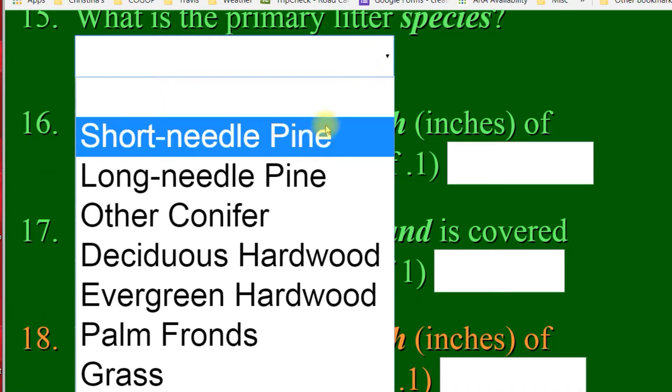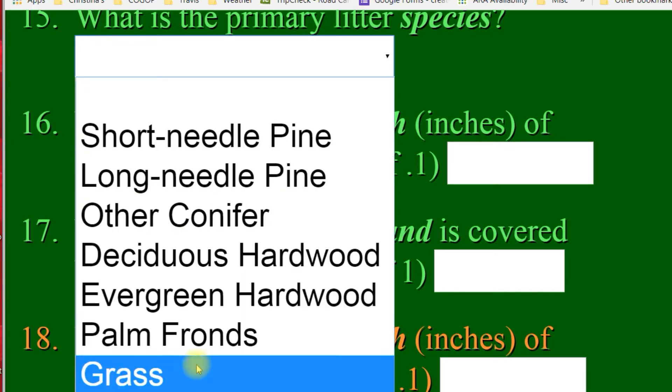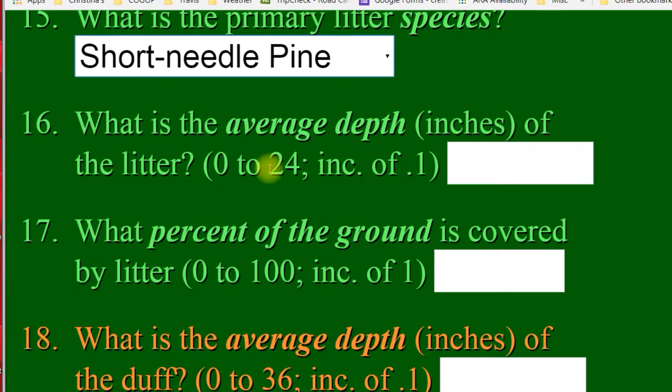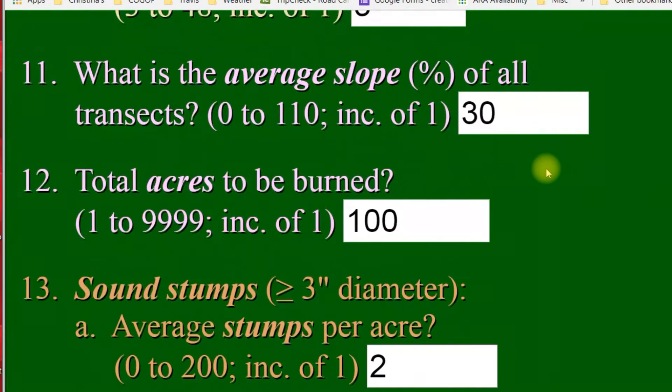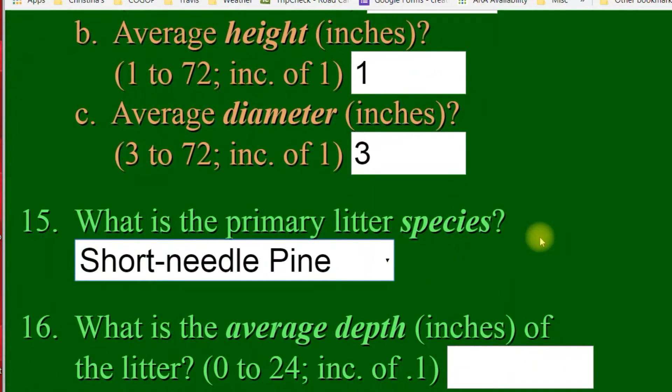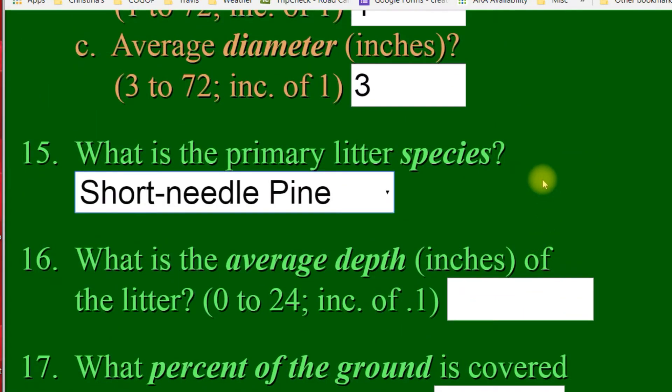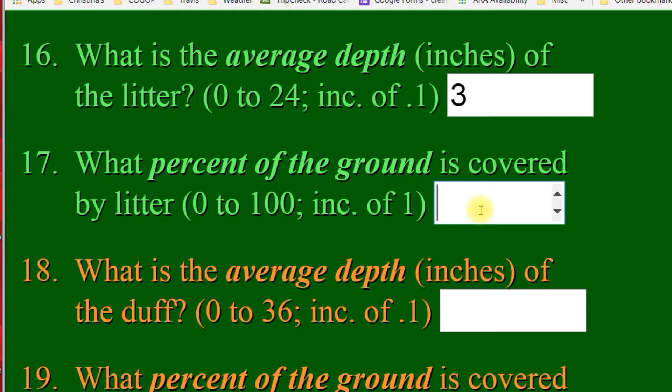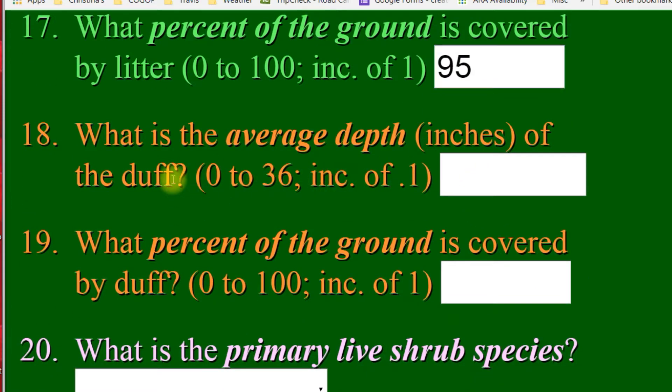In your primary litter species, we basically give you some options here. You've got short needle, long needle pine, other conifer, deciduous evergreen, palm, fronds, or grass. You pick your litter species. Now, why did I ask for litter species here and then also ask for the primary fuel species up top? Just wanted to give you guys an ability to write down what's the litter on the ground. Because the litter on the ground, I have found, is sometimes different from your canopy. You might have a cedar tree canopy, but you'll have pondo needles on the ground because there's some pondos nearby that are blowing into your space. So, looking at the litter of the ground fuels. What's your average depth in inches? That's pretty simple to figure out. What percentage of the ground is covered? Let's say 95. And the average depth of your duff.